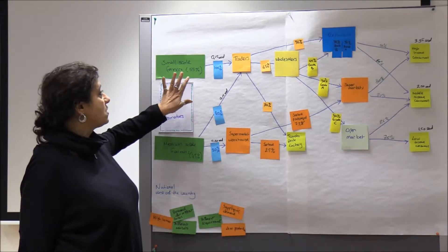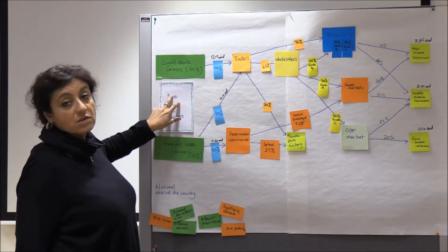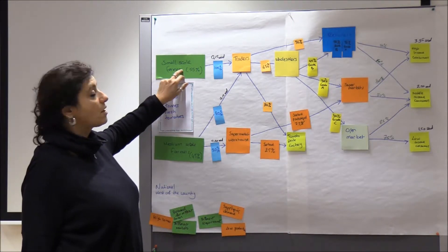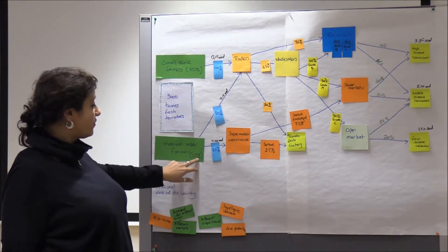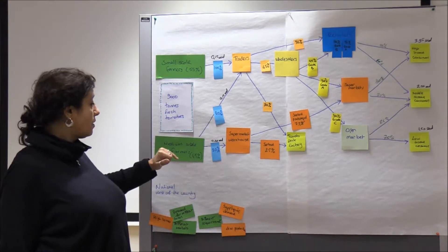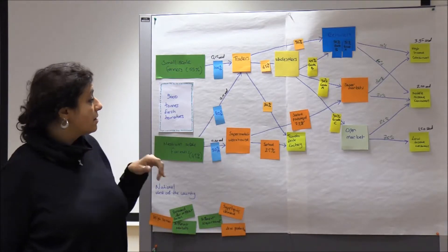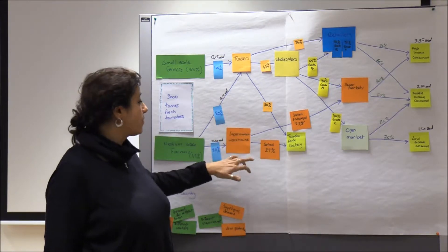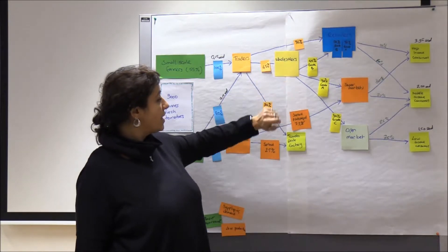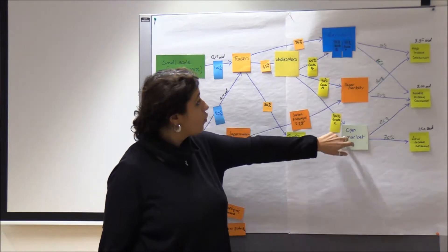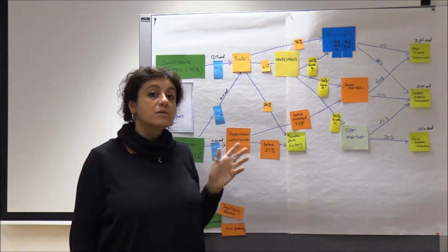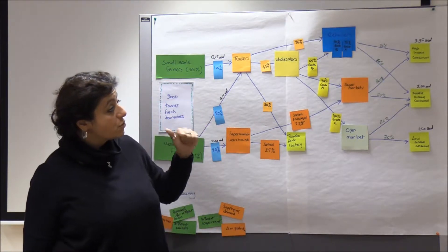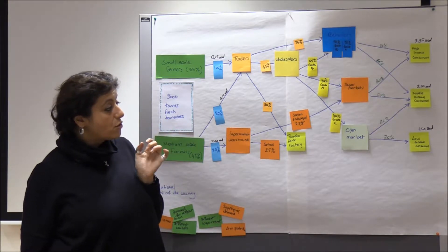I have the information that 55% of the tomato which is totally 19,000 tons, 55% come from small scale farmers and 45% from medium scale farmers. The other actors that I first identified were the traders, the supermarket warehouse that also buys directly from the farmers, the wholesalers, the supermarkets, the open market, retailers and then I had the three different consumer segments for my case, which are the high income consumers, the middle income consumers and low income consumers.